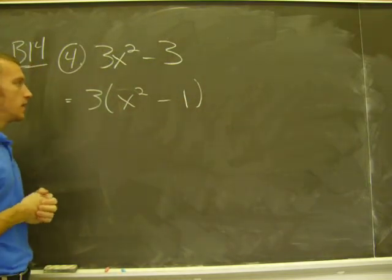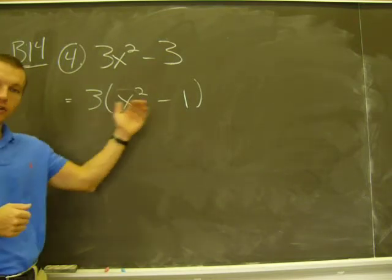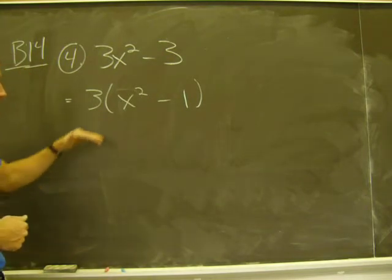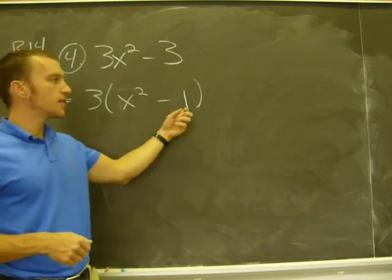So, in the last example, number 3, I factored out the greatest common factor, and I couldn't do anything else with it. That is, what's inside the parentheses. But this problem's different. I look at this, and I see that it factors.